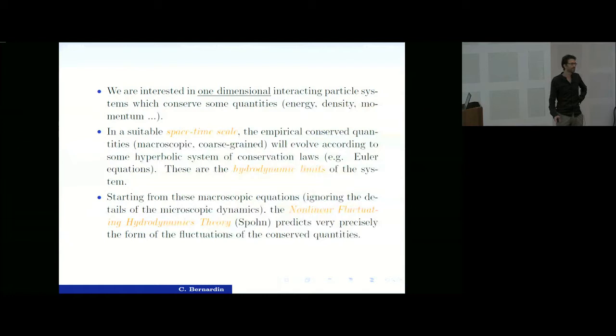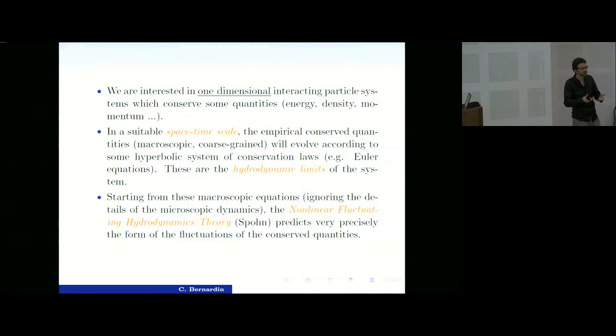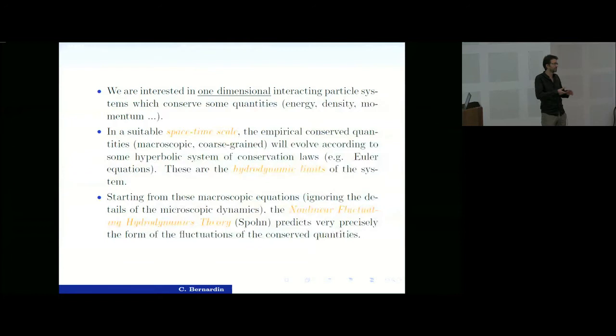We can think of Euler equations as the typical situation. Without the hydrodynamic limit of the system, quite recently there is a theory developed by Spohn called the non-linear fluctuating hydrodynamic theory, which claims that if you have an interacting particle system with macroscopic behavior described by a system of conservation laws, just by looking at those macroscopic conservation laws you can deduce the form of the fluctuations of the conserved quantities at equilibrium.